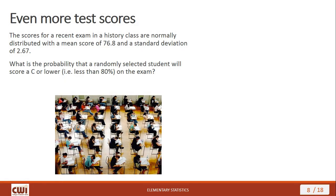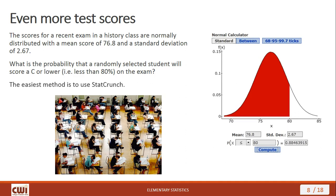For the same class, what's the probability that a randomly selected student will score a C or lower — in other words, less than 80% on the exam? We go back to StatCrunch and our normal calculator. Switch to the Standard option, select less than or equal to from the dropdown, and put in the value for the z-score field. We get an area of 0.8846 — meaning the probability of scoring less than a B is about 88%. Apparently the students aren't doing what they need to be doing, or the professor is making it very difficult.